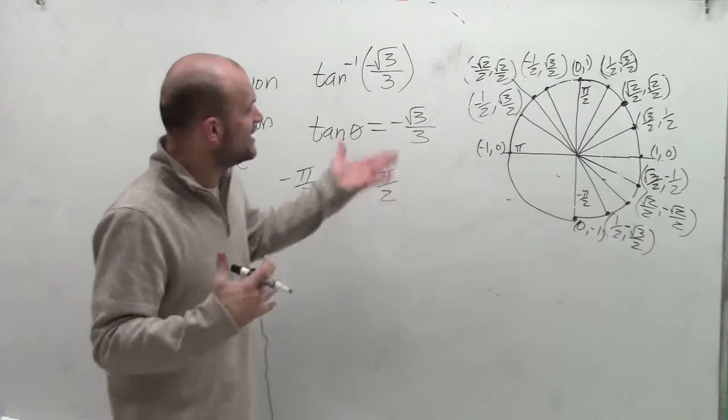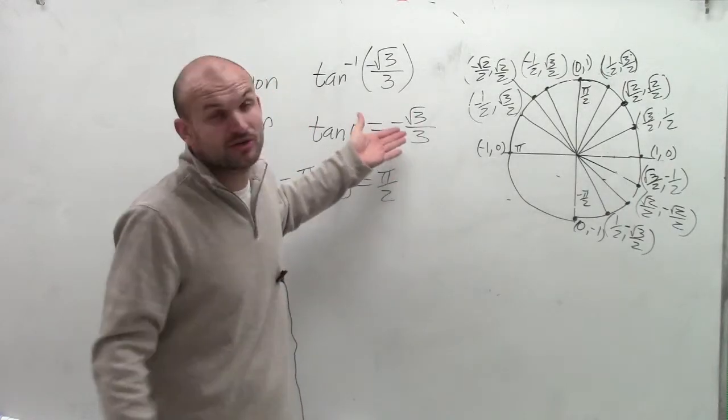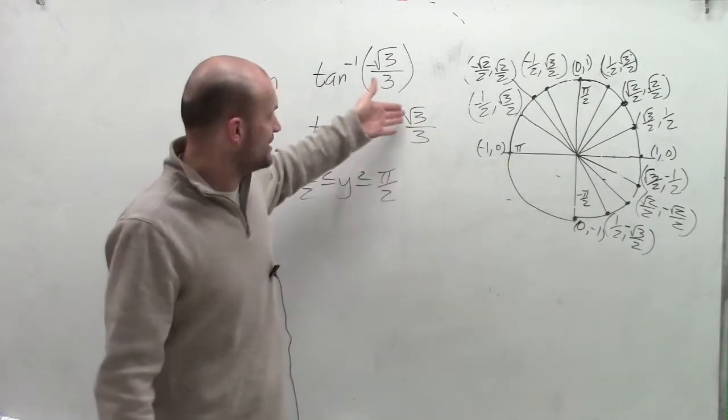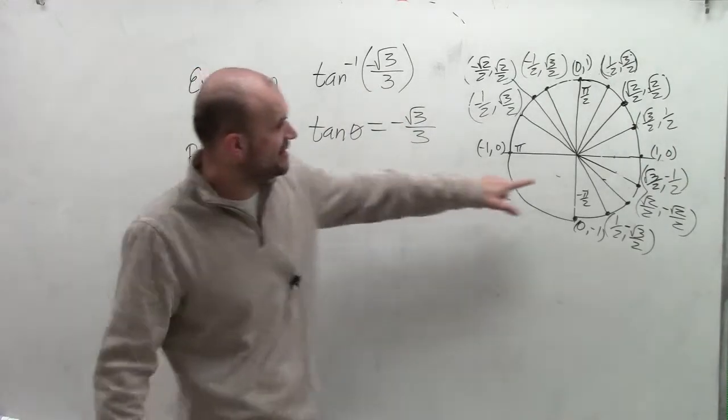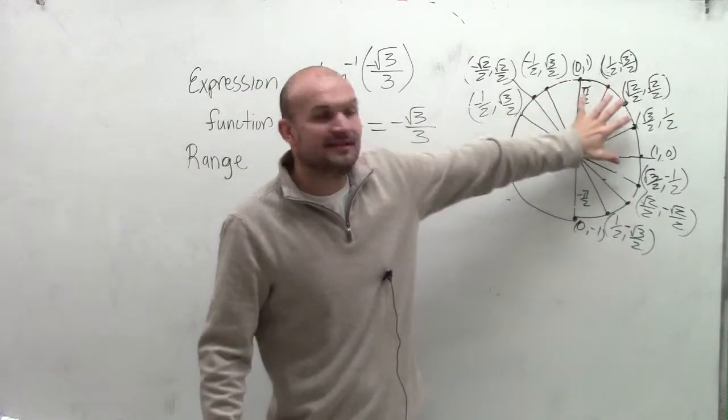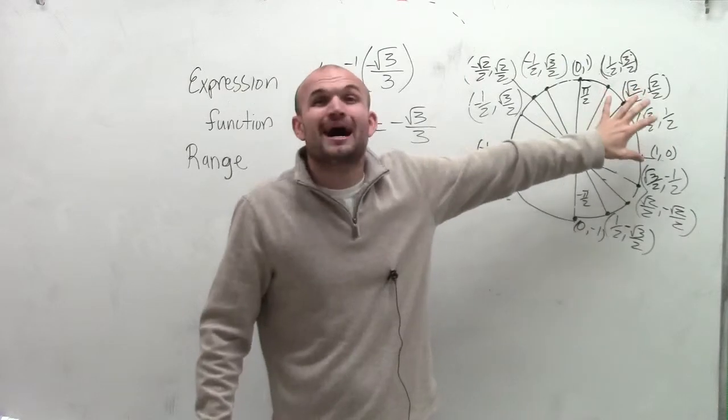So what I need to determine is what coordinate points are going to produce me with a negative value that is within my range. Well, nothing in the first quadrant is going to produce that because those are all positive values.